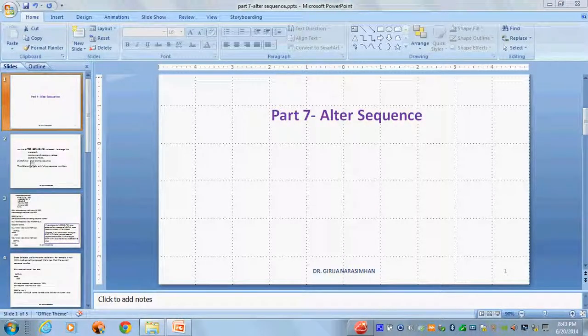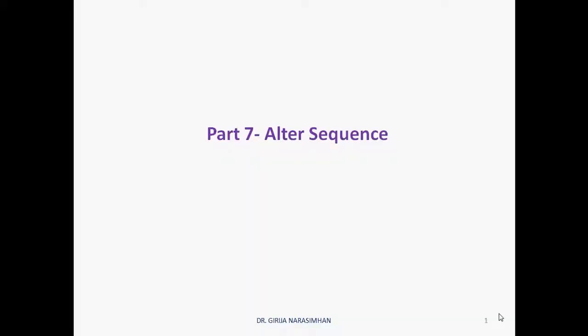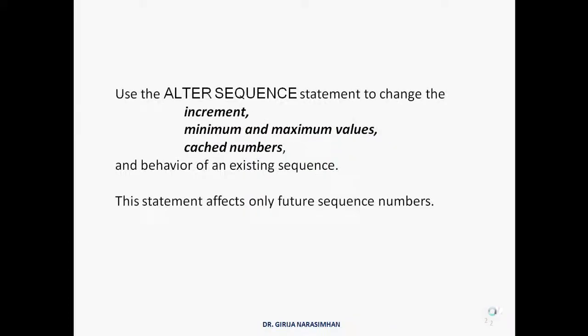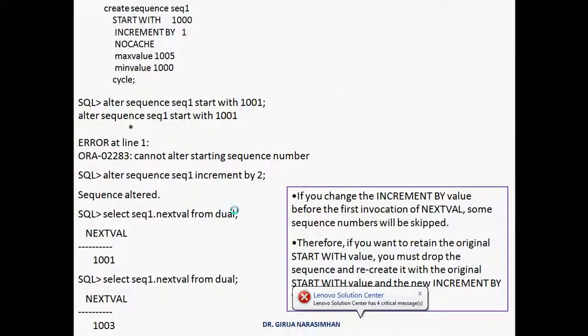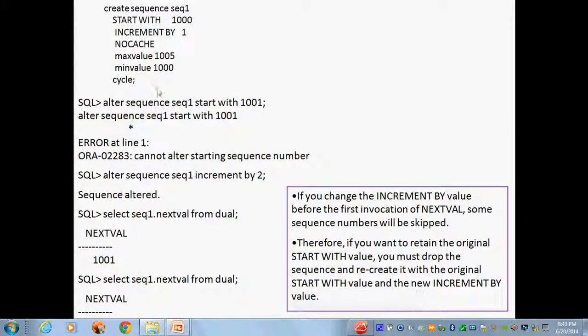Part 7: ALTER SEQUENCE. We study how to alter an already existing sequence. Use the ALTER SEQUENCE statement to change the increment, minimum value, maximum value, cached number, and behavior of an existing sequence that is already created. This statement affects only future sequence numbers after ALTER. There are some conditions there.